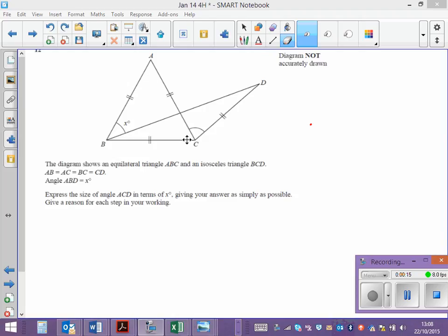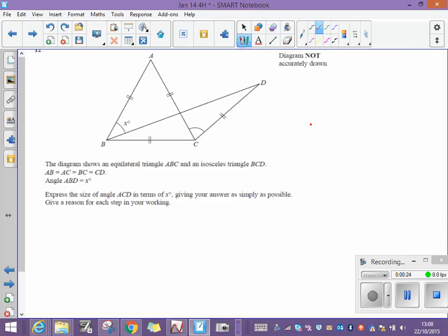We also have the fact that triangle BCD, that's this one over here, is isosceles, and these two sides are the ones which are the same length, which means that the two angles which are the same size are that one and that one. So let's just remember that.